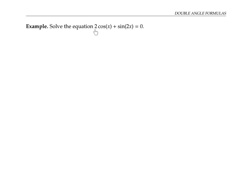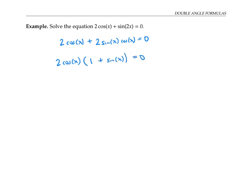Finally, let's solve the equation two cosine x plus sine of two x equals zero. What makes this equation tricky is that one trig function has argument x but the other has argument two x. So I want to use my double angle formula to rewrite sine of two x. I'll copy down the two cosine x, and sine of two x equals two sine x cosine x. I can factor out two cosine x from both terms, giving two cosine x times the quantity one plus sine x equals zero. That means either two cosine x equals zero, or one plus sine x equals zero, simplifying to cosine x equals zero or sine x equals negative one.